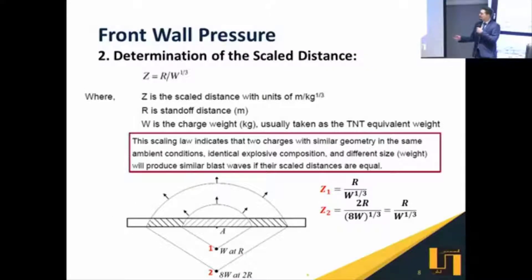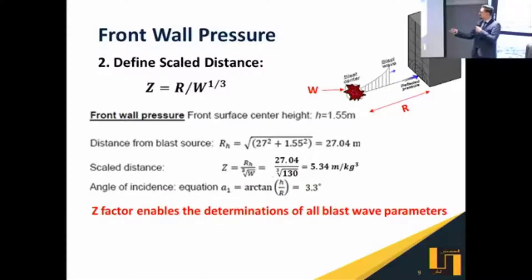The second step is to determine the scale distance or the Z factor. This is a scale that relates the standoff distance mentioned earlier, which is the distance between the explosive and the building, to the equivalent TNT mass. It's very important to determine this Z factor, since by knowing this value we can enter the UFC code charts and determine all the blast wave parameters. Also, if I have two explosions, each with different combinations of TNT mass and standoff distance, these two explosions will produce the same blast waves if they have the same scale distance Z. So we determined this value, the scale distance, and it was found that it is 5.34 meters per kilogram to the power of one-third.